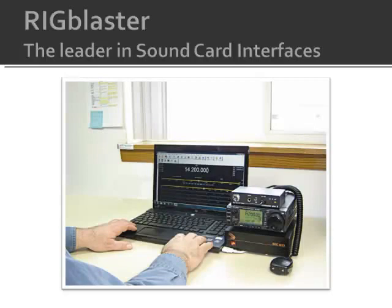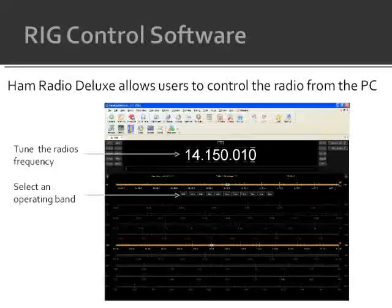When used in combination with rig control software such as Ham Radio Deluxe, you can control your radio from your PC — for example, tuning your radio's frequency and selecting operating bands.